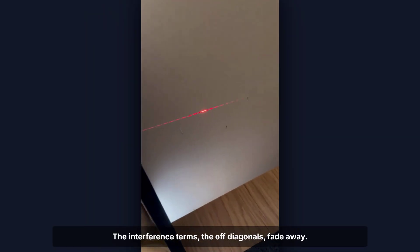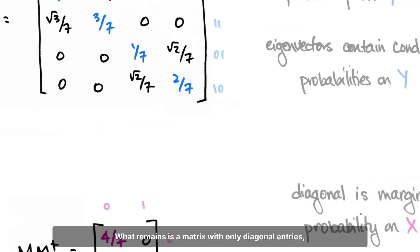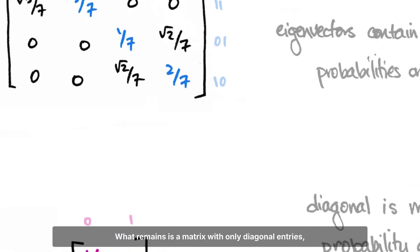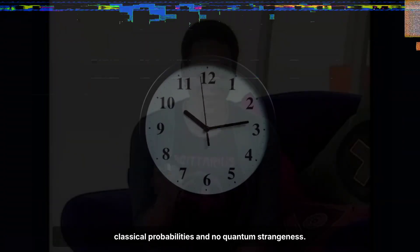The interference terms, the off-diagonals, fade away. What remains is a matrix with only diagonal entries, classical probabilities, and no quantum strangeness.